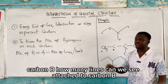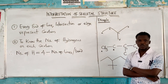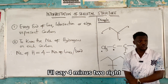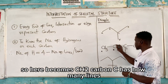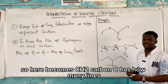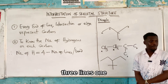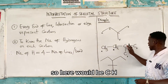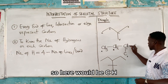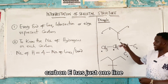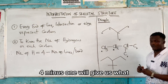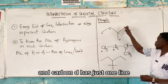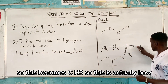Carbon C has three lines — one, two, and three — so four minus three is one, giving CH. Carbon E has just one line, so four minus one gives three hydrogens — CH3. Carbon D also has just one line, so it also becomes CH3. So this is how to know the number of hydrogens on each carbon.